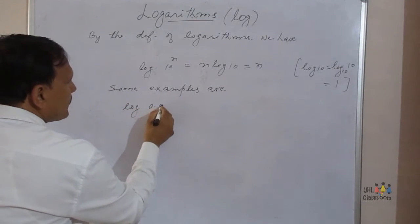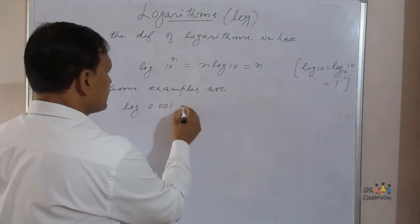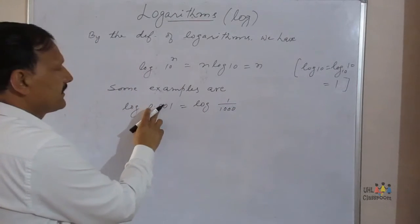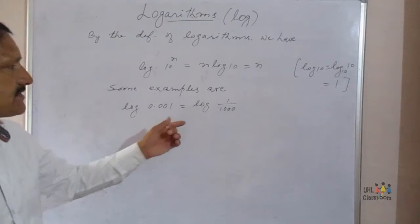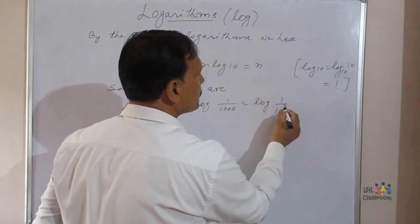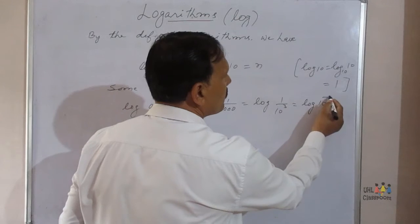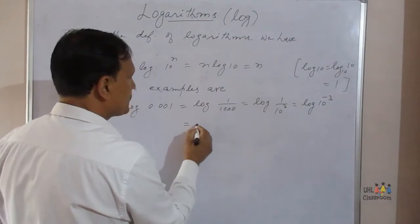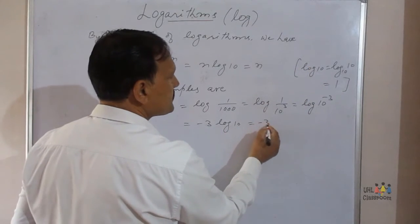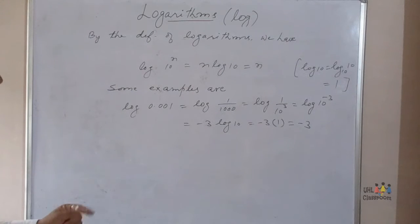For example, log of 0.001 — I can write this as log of 1 upon 1000, which equals log of 1 upon 10^3, which equals log of 10^(−3). This is equal to −3 log 10. And since log 10 equals 1, that is −3 × 1, which equals −3.